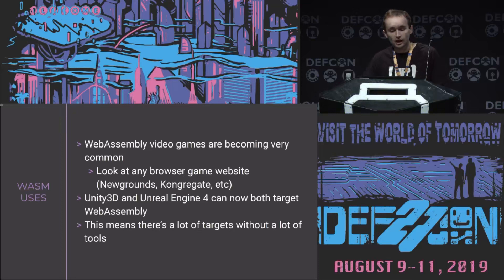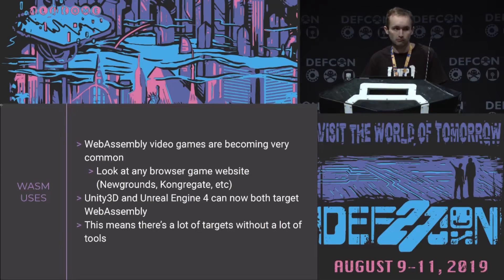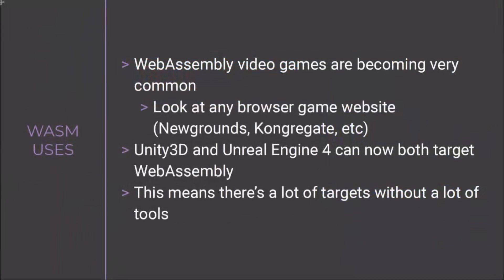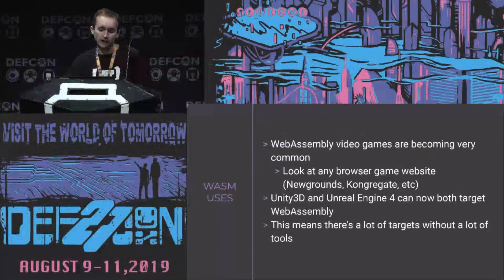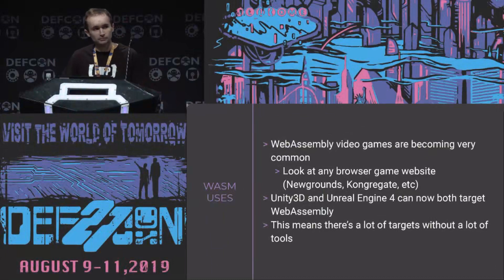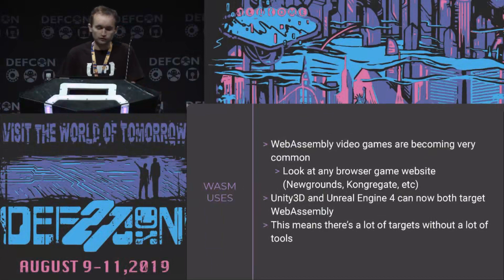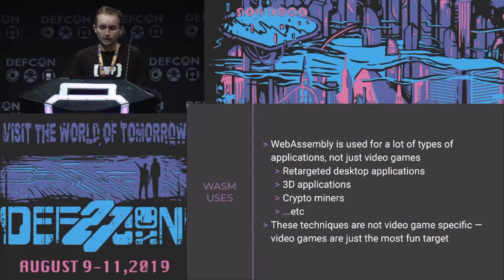And that's with good reason, because the two really common engines you'll run into these days for video games are Unity 3D and Unreal Engine 4. Both of these engines can now target WebAssembly. So you can build your Unity 3D game, click a couple of buttons, and it's running in your browser using WebAssembly as the backend. As a hacker, this means there's a ton of targets out there, but not really a lot of tools to interface with them.